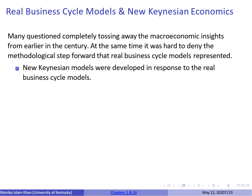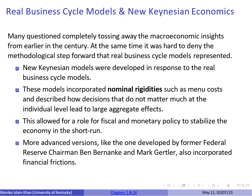Within real business cycle models, consumers made decisions to maximize lifetime utility and firms made decisions to maximize profits. Many economists questioned this complete move away from macroeconomic insights, and thus the New Keynesian models were developed in response. These models incorporated nominal rigidities such as menu costs and described how decisions that do not matter at the individual level — like an increase in prices — lead to large aggregate effects. These models also allowed for a role of fiscal and monetary policy to stabilize the economy in the short run, and more advanced versions incorporated financial frictions.